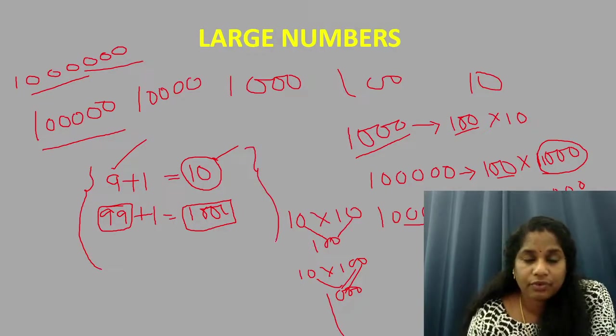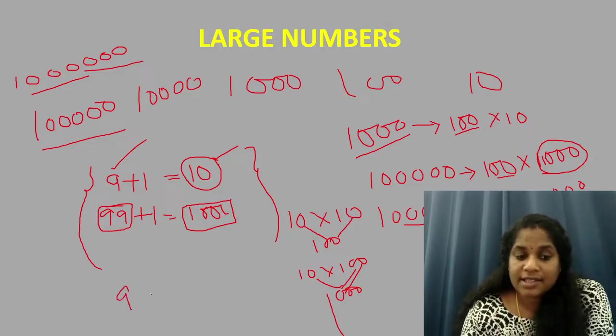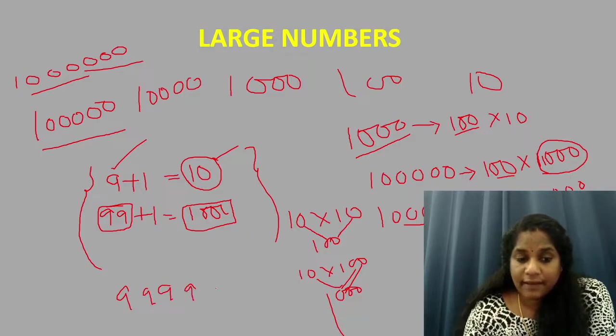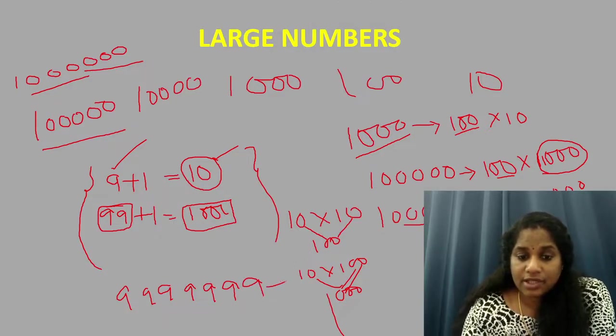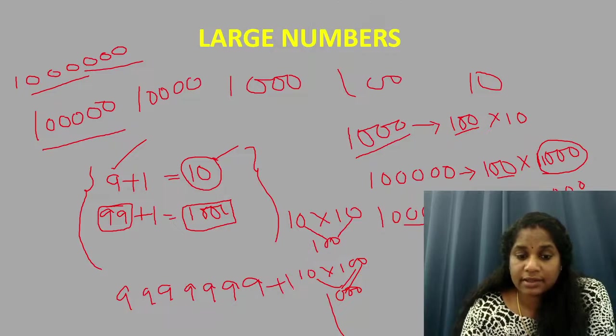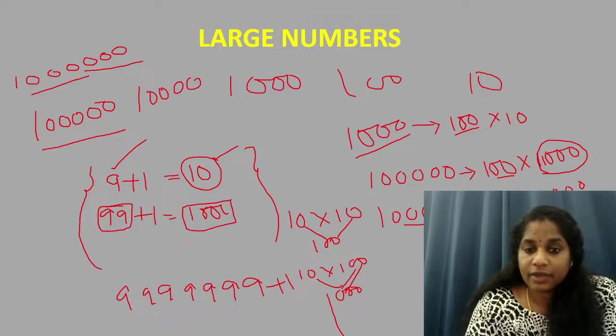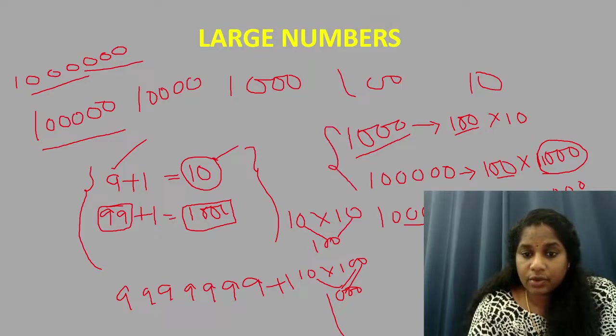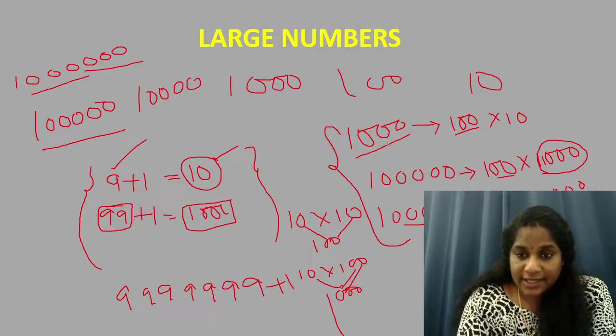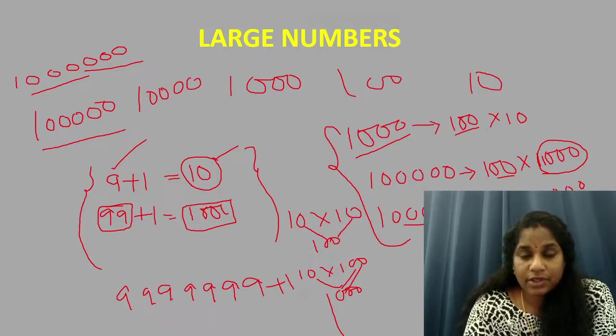If somebody asks you to find out the largest seven digit number, what can you do? You can just put six nines which is the largest six digit number. And this is the largest seven digit number. You can just add one to get the smallest eight digit number. Just don't forget this. This is very useful. So I hope this trick where you have to find out number of tens in thousand or number of hundreds in thousand, that also you have understood properly.